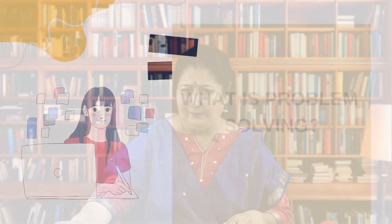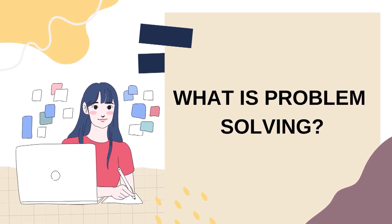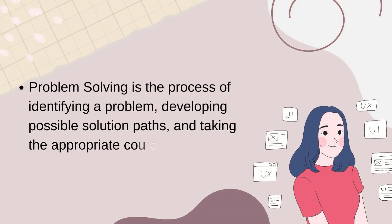What is problem solving? Problem solving is the process of first becoming aware that there is a problem — identifying the problem. Once you become aware, then you develop possible solution paths — what are the different options available. And then you take the appropriate course of action: out of the various probable solutions, which one to choose and why, and what course of action to take after selecting a particular solution.